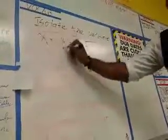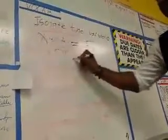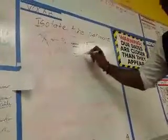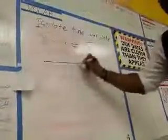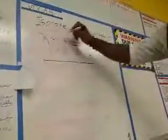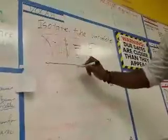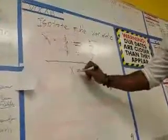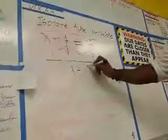We're going to add 3 to both sides. So now the 3's drop out again, x is left on one side by itself, and you get 18.